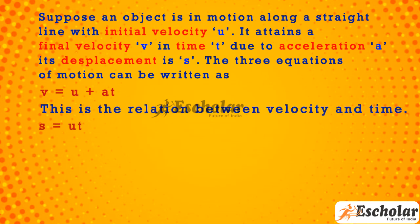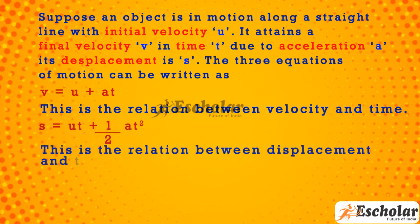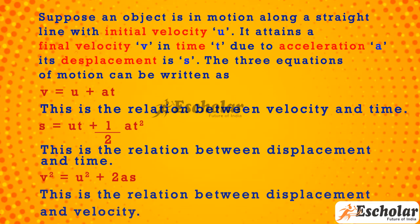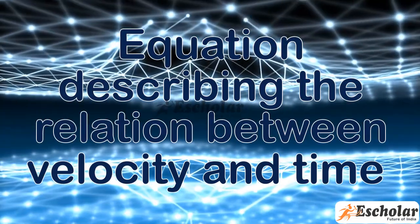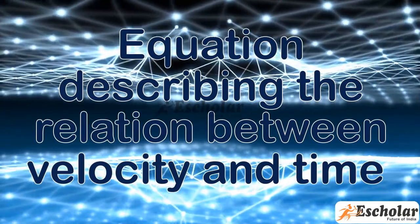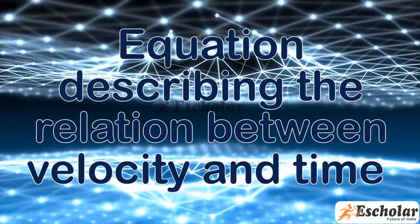The second equation is s = ut + ½at², the relation between displacement and time. The third equation is v² = u² + 2as, the relation between displacement and velocity.